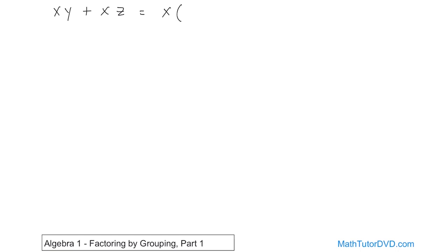Open up a set of parentheses. If you pull out an x from the first term, all that's left is the y. When you pull out the x from the second term, all that's left is the z. So you have y plus z. The reason there's a positive sign is because there was a positive sign to begin with. You can always check this by distributing: x times y gives you xy, and x times z gives you xz. So this is the correct factorization.